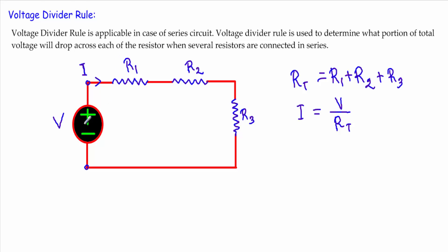Now, what is the voltage divider rule? We are supplying with a voltage V and we have three resistors R1, R2, and R3. The voltage divider rule deals with what portion of this V will drop across R1, what portion will drop across R2, and what portion will drop across R3. The rule that tells us what portion of voltage drops separately across R1, R2, and R3 is our voltage divider rule.